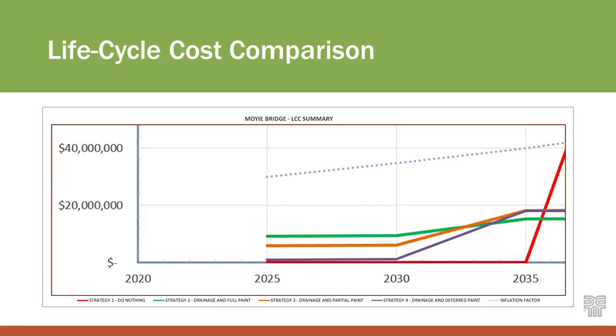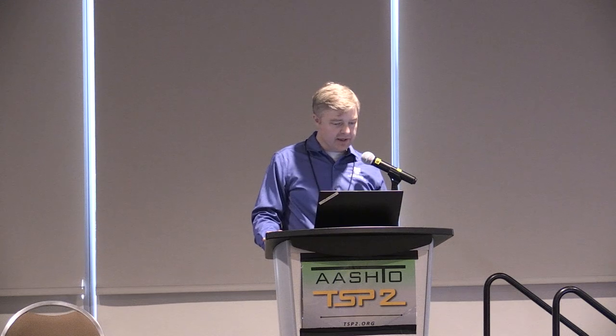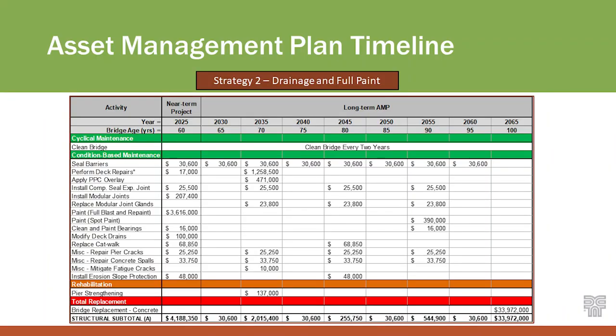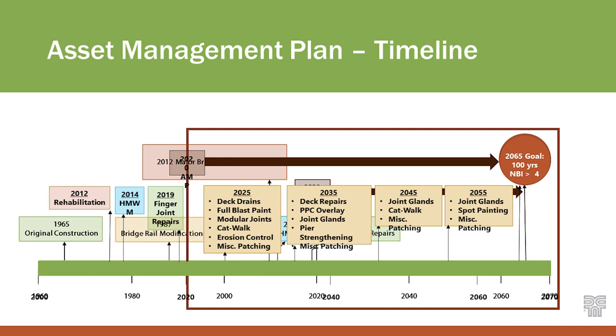Putting it all together, here's strategy two: timeline, activities, cyclical, condition-based, rehab, and total replacement. Circling back to the asset management timeline, we're at 2020. We've identified four projects with specific key components needed to reach the 2065 goal of 100-year life, with NBI ratings for all elements greater than four. With that, I'll turn it over to Dan, who will talk about how these are plugged into ITD.